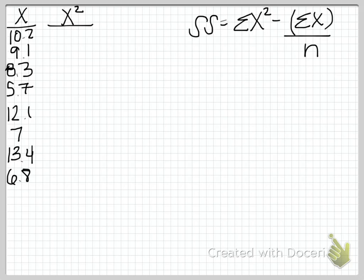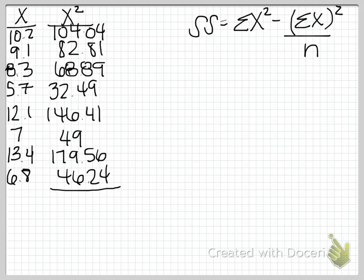So in order to figure out our sum of squares, I forgot my square here, we're going to have to both sum our scores, as well as square each score, and then sum those squared scores. So for example, for 10.2, if we square that, we come up with 104.04. For 9.1, it's 82.81, and so on. So I'll go ahead and fill in those squares, so that we can sum those. So I've gone ahead and squared each one of my scores, and if I sum all of those numbers, I get 709.44.